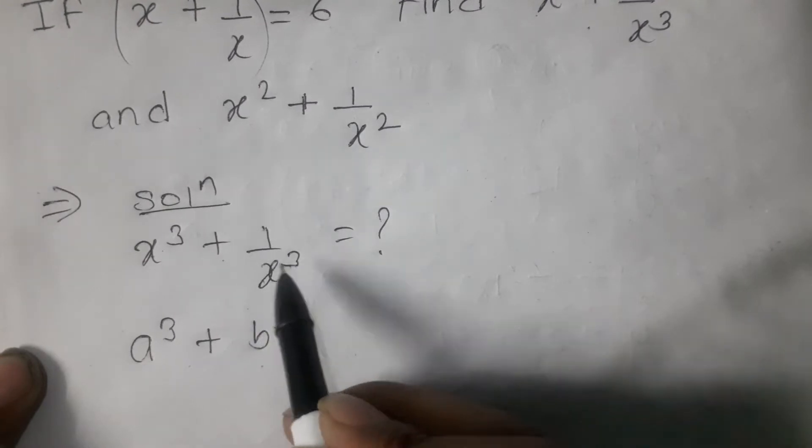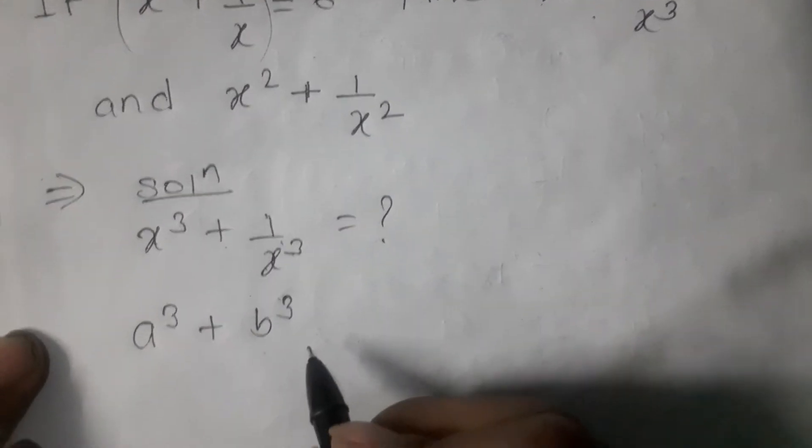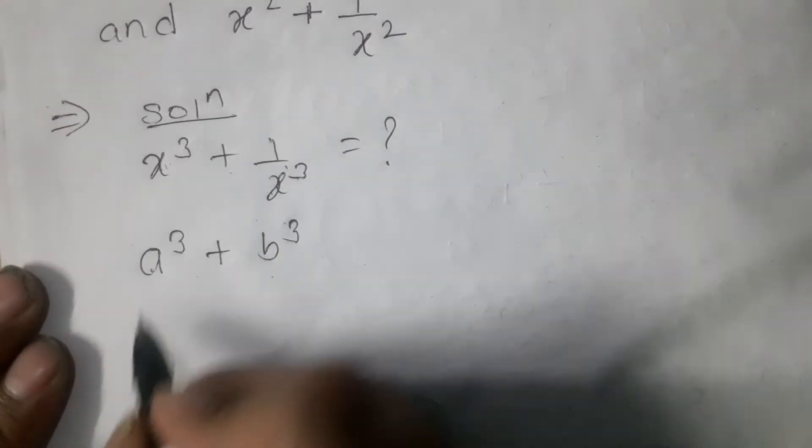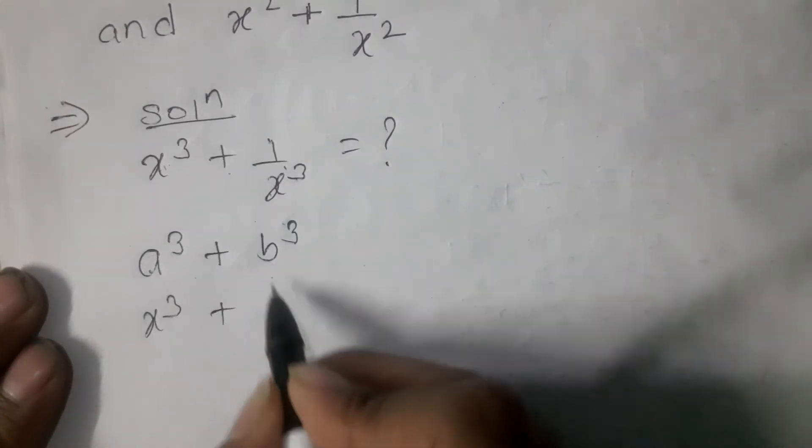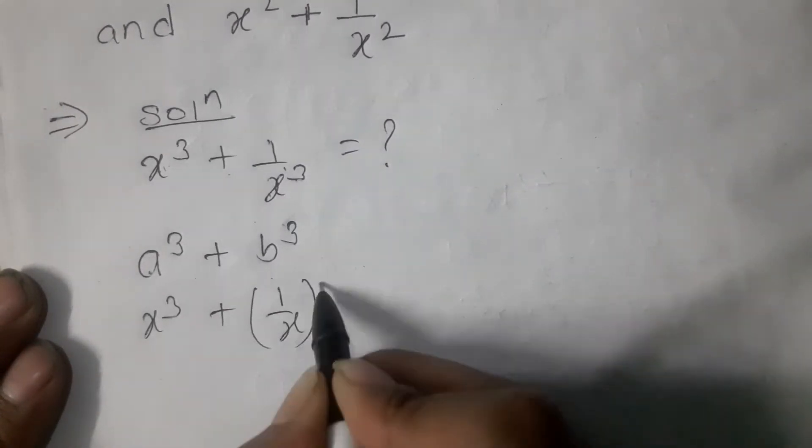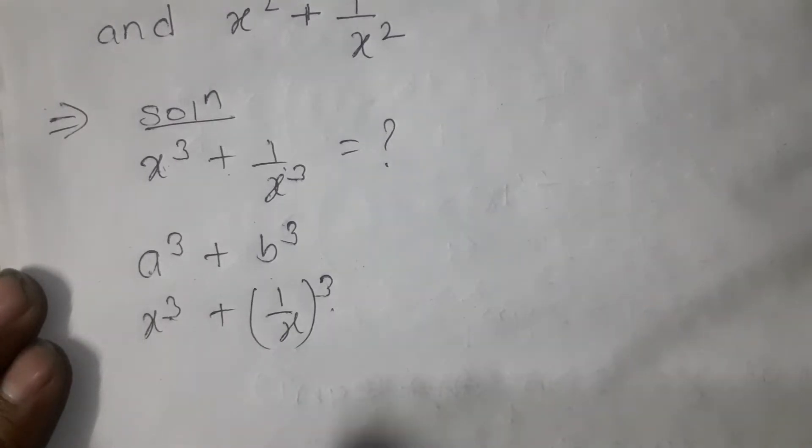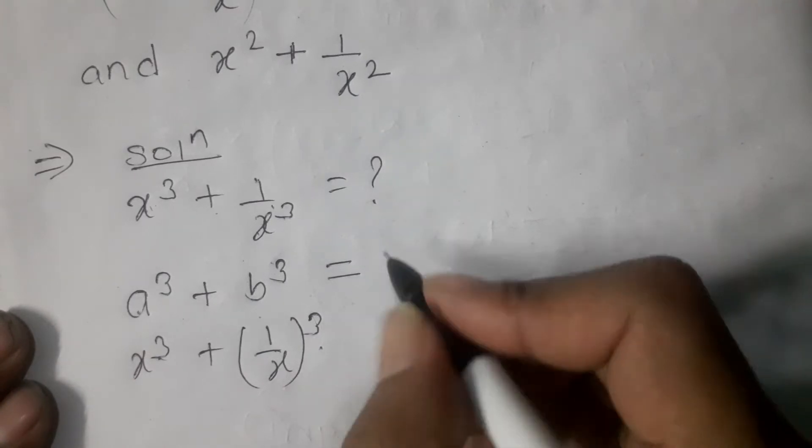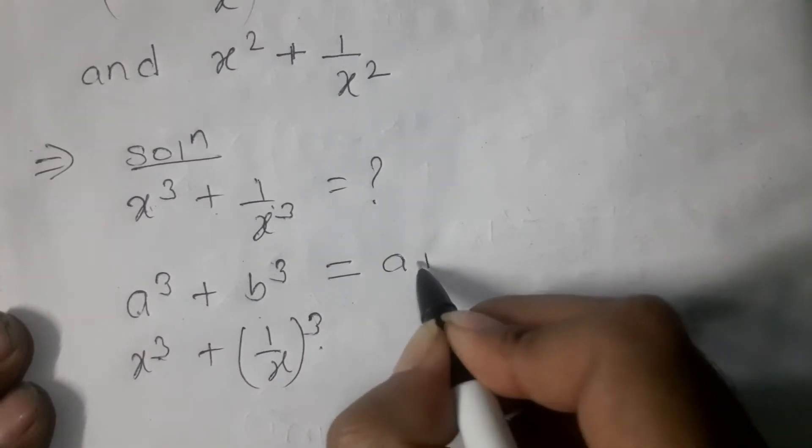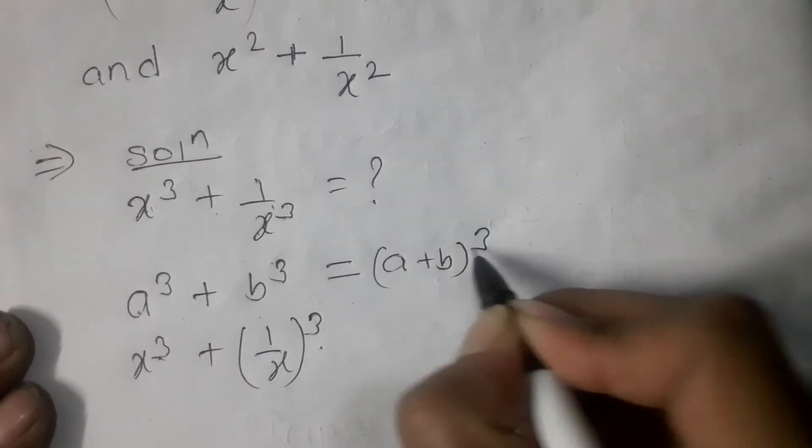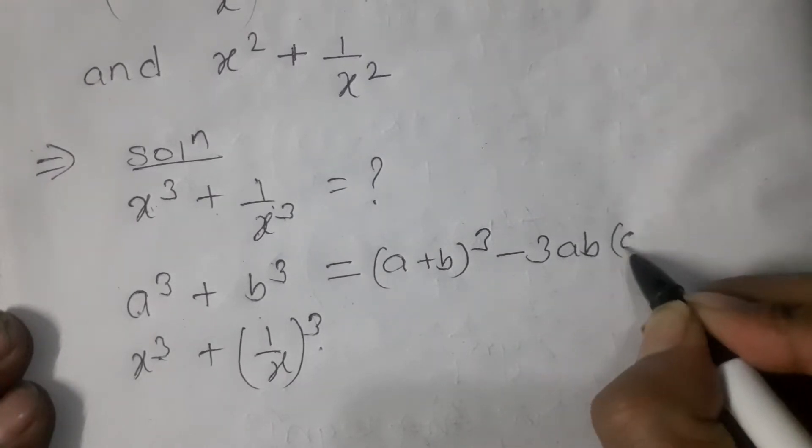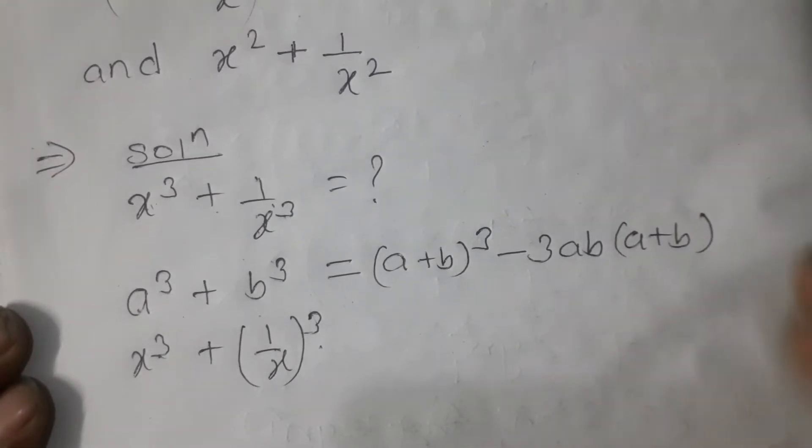a cube is x³, b cube is 1 by x³. So a³ plus b³, the formula is a plus b times, minus 3ab bracket a plus b. So the formula is made.